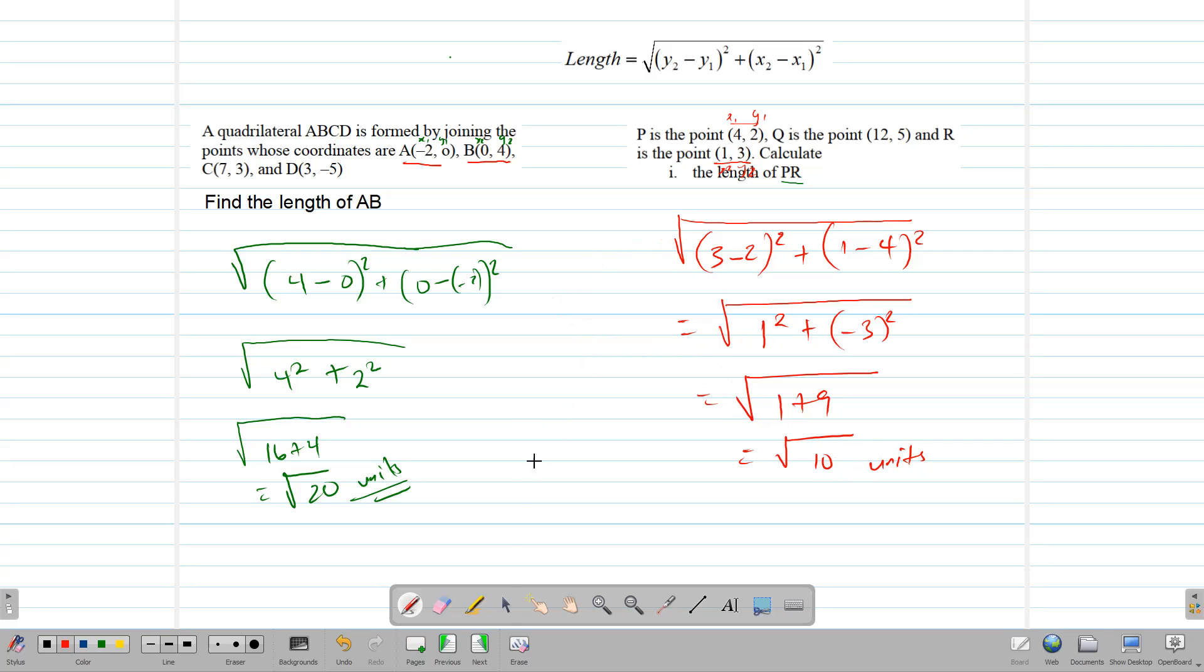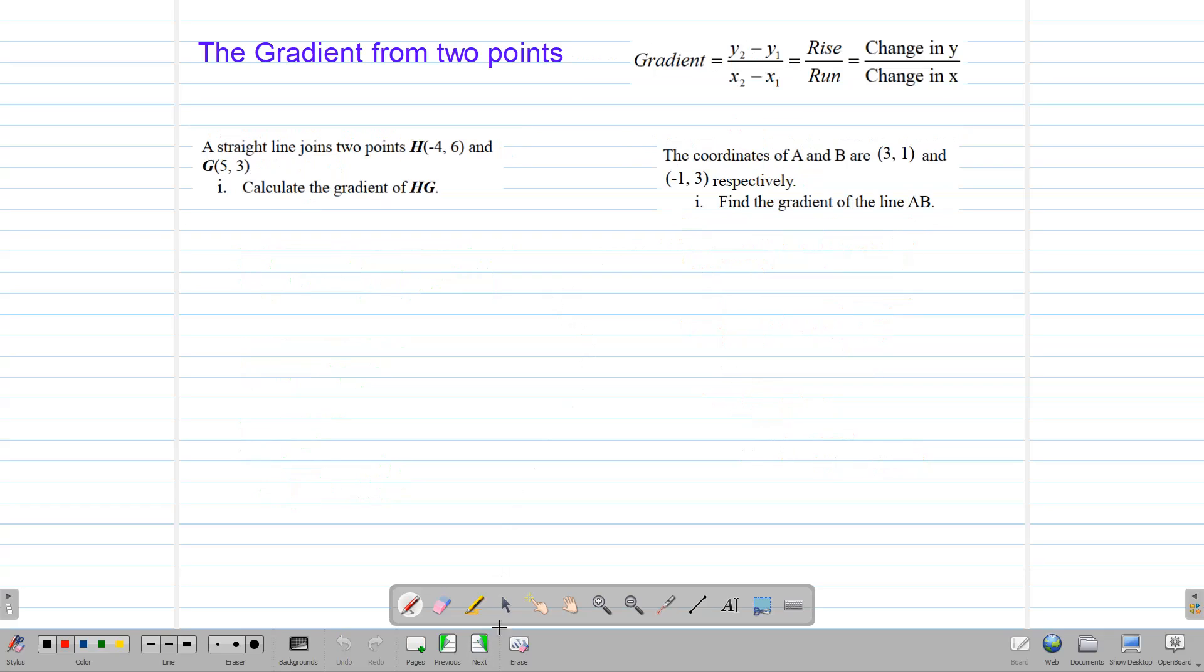Now that we have looked at length, we can go on to look at the gradient given two points. Now remember, we said gradient is the slope or the steepness of a line. We also describe it as the rise over run, or we describe it as the change in y over the change in x. This is a formula we use when we have two points on the line. y2, take away y1, divided by x2, take away x1. So this gives us the change in y. That gives us the change in x.